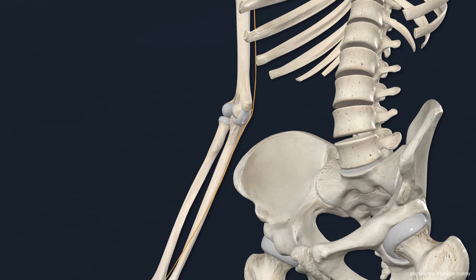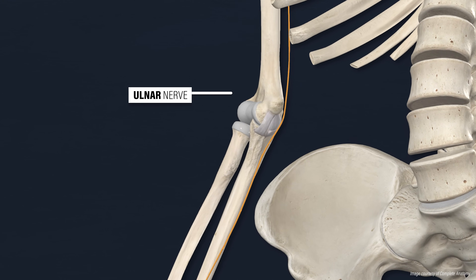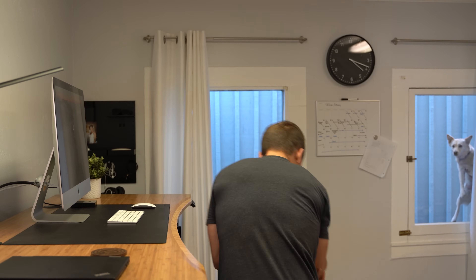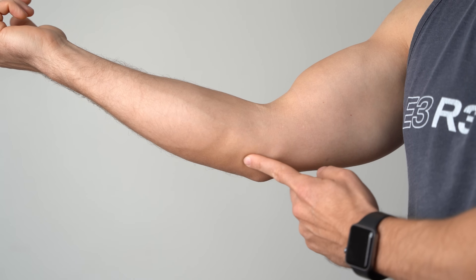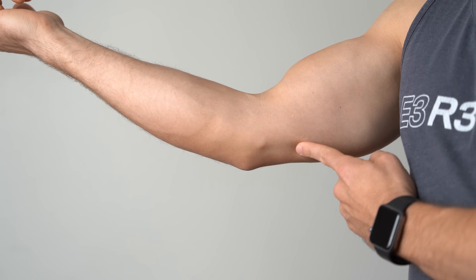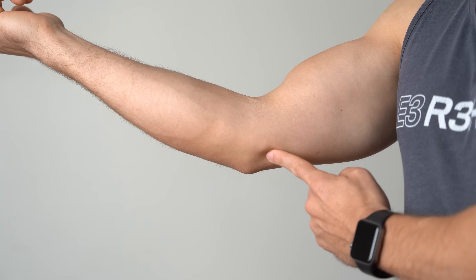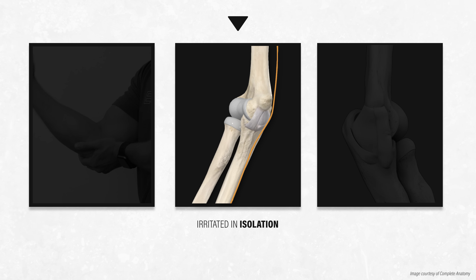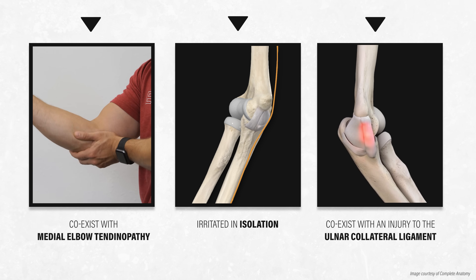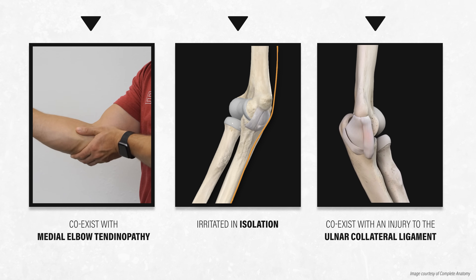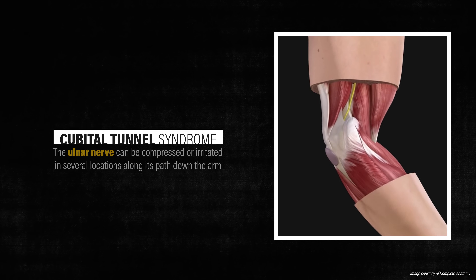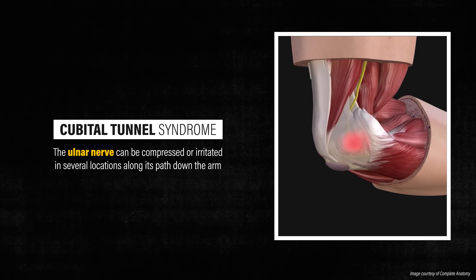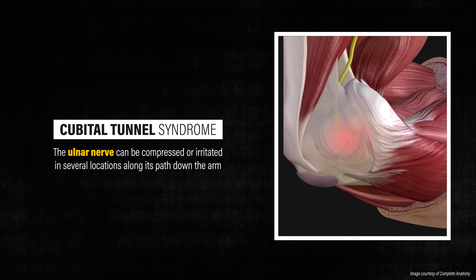Any assessment of symptoms around the inner elbow should include an evaluation of the ulnar nerve. If you've ever hit your funny bone, you've actually hit your ulnar nerve. It runs just behind the medial epicondyle, so it's easy to find, feel, and unfortunately accidentally bump on a table or desk. It's possible for the ulnar nerve to be irritated in isolation, or for problems to coexist with medial elbow tendinopathy or an injury to the ulnar collateral ligament. This is commonly referred to as cubital tunnel syndrome, but the ulnar nerve can be compressed or irritated in several locations along its path down the arm.